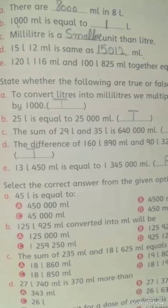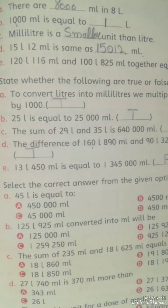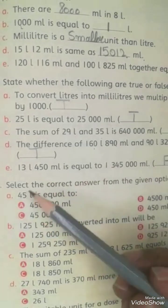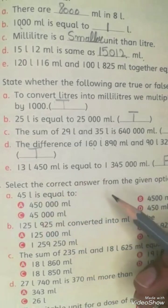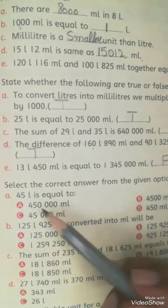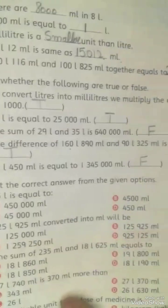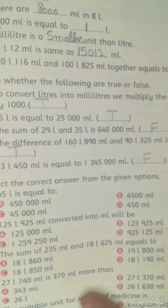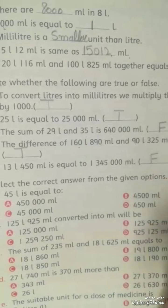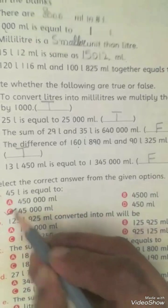Assalamualaikum warahmatullahi wabarakatuh. We are going to start with Exercise 5c's remaining part, Question number 3. Let's check the correct answer from the given options: 45 liters is equal to how many milliliters? You will multiply by 1000 and you will have 45,000 as your answer. So C is your answer.